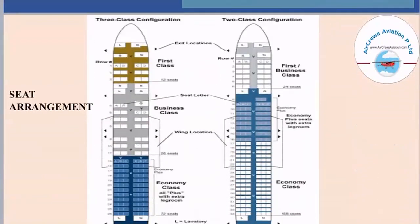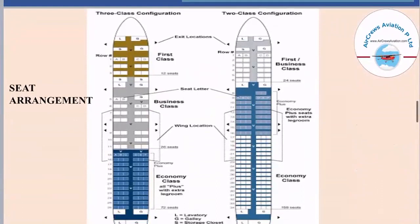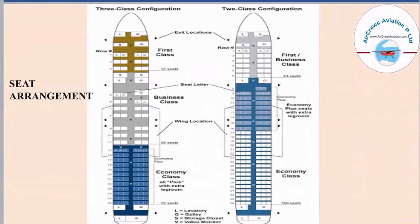Next we will be talking about the seat arrangement in an aircraft. Here we have two pictures — the first is for three-class configuration and the second is for two-class configuration. Seat arrangement may vary according to different aircraft, and these arrangements are demanded as per the requirements of the airlines. In the three-class configuration, just after the nose we have the first class. The letters shown represent: L for lavatory, G for galley, S for storage closet, and V for video monitor.